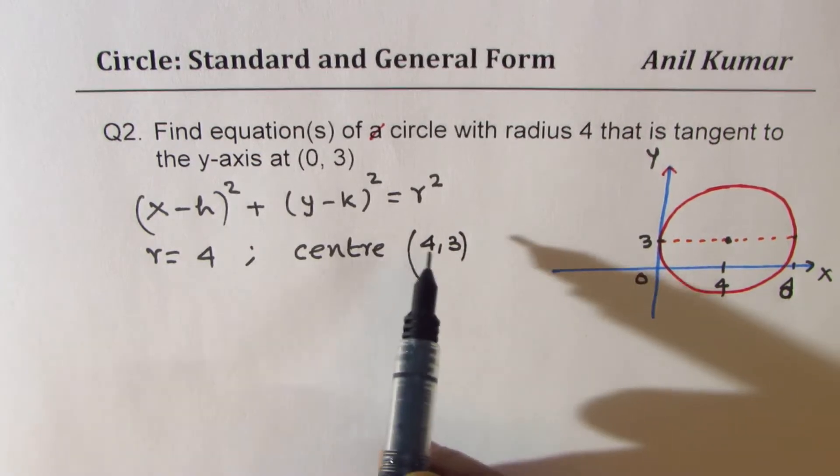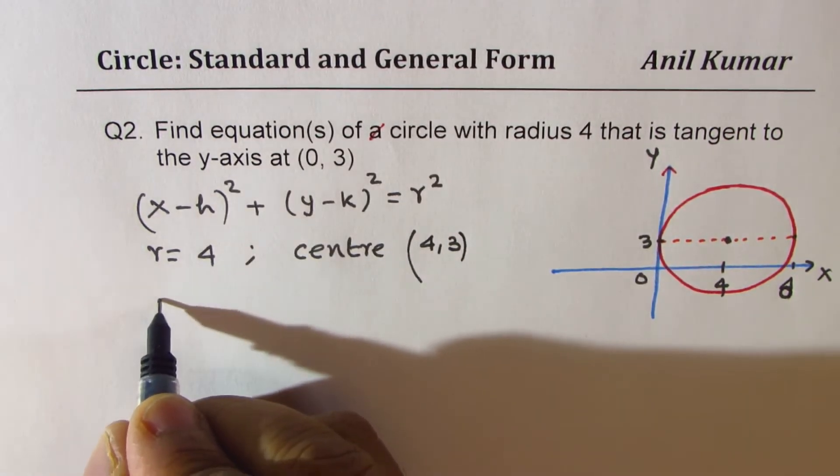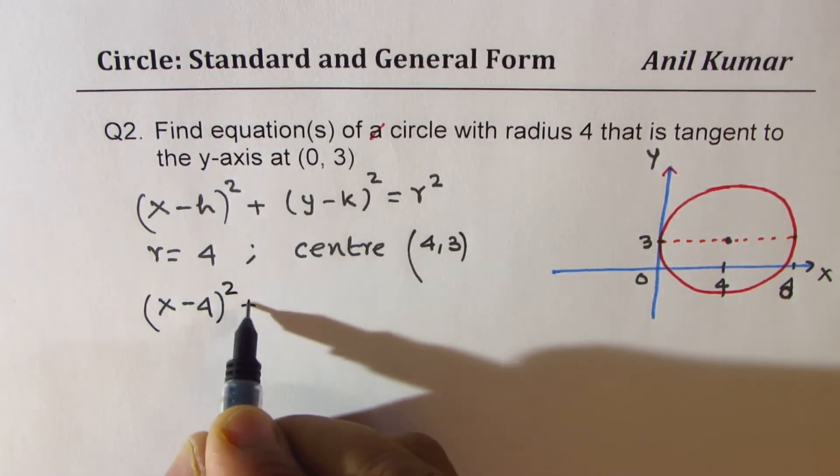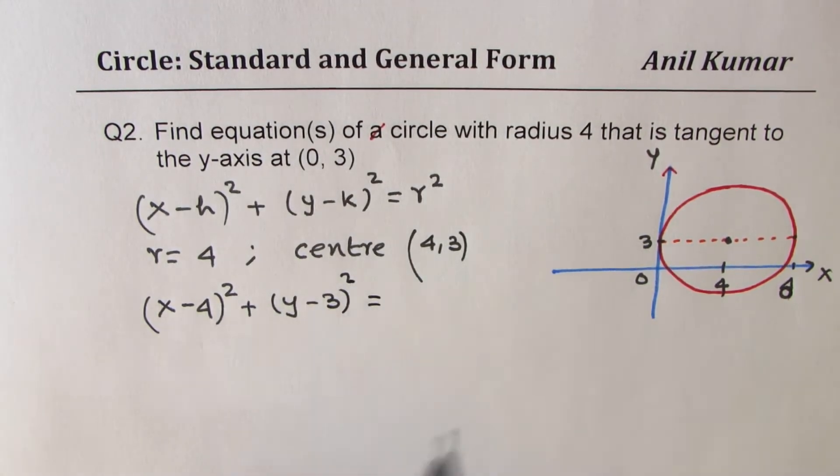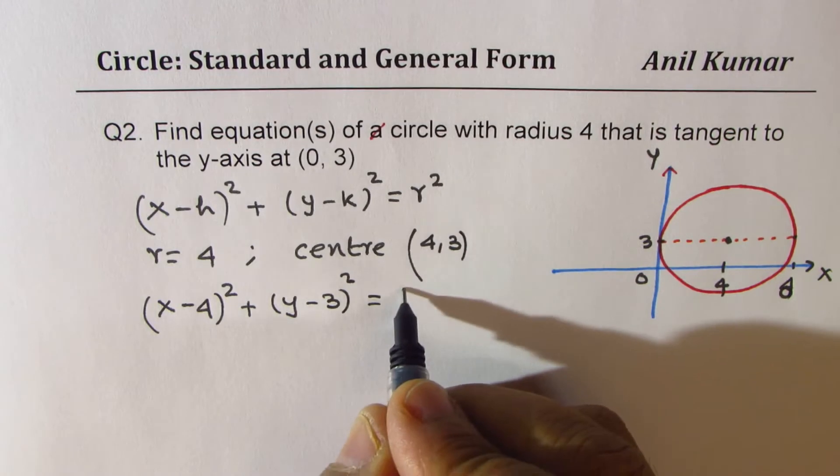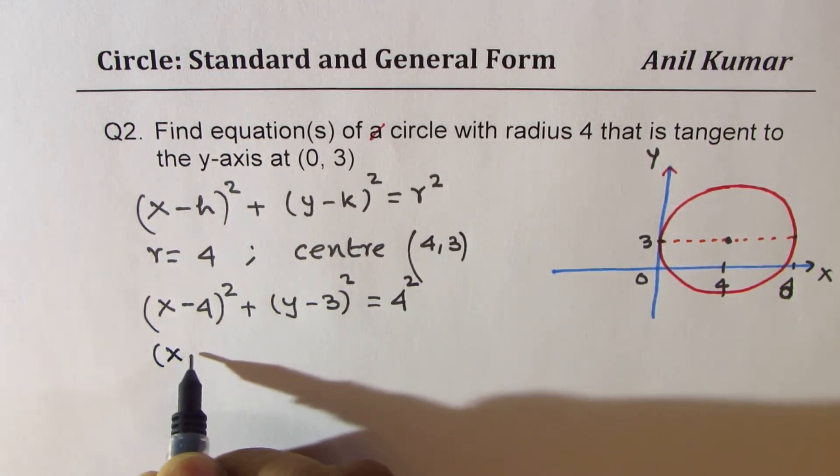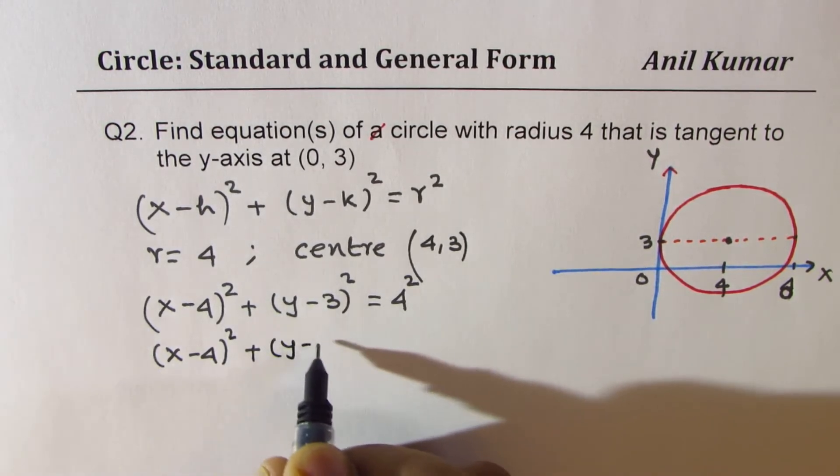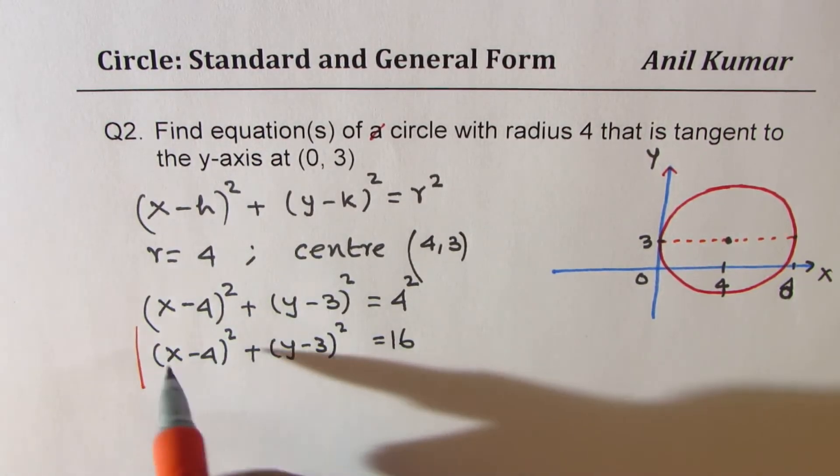Now for that case, I could write down the equation of the circle as (x - 4)² + (y - 3)² = 4². So we could write this as (x - 4)² + (y - 3)² = 16. So we get one of our equations.